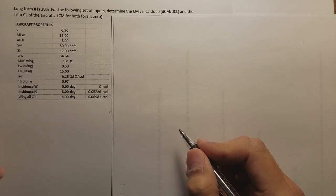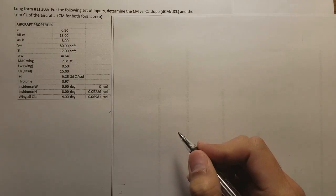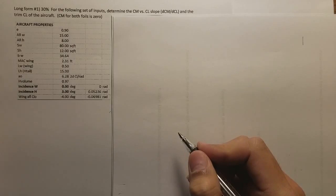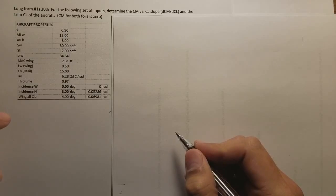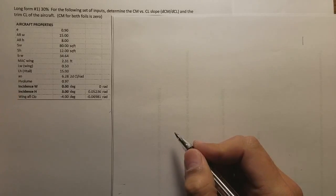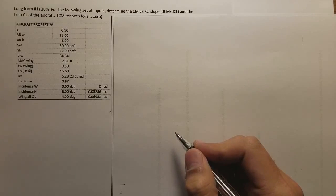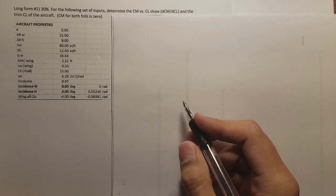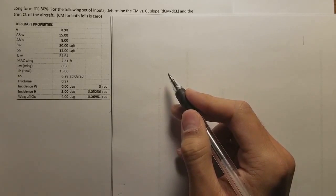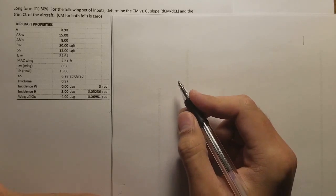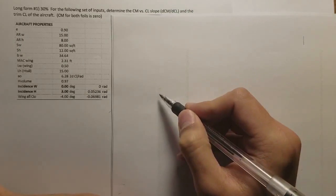Hey guys, the example problem I'll be doing today is from the last static stability exam. When I was reading the papers, I saw many of you weren't able to figure out the answer for this one, even though it was part of the last homework. If you go through the XL5 static stability spreadsheet solutions, you should have all the formulas required. Here I will go through all the formulas and show you how to get the slope of CM over CL as well as the trim CL of the aircraft.